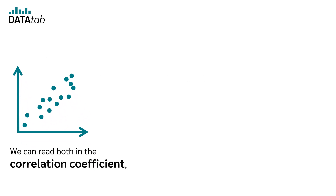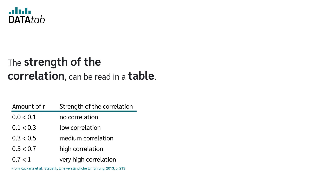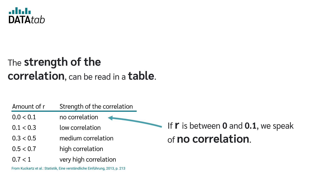We can read both in the correlation coefficient, which is between minus one and one. The strength of the correlation can be read in a table. If r is between zero and zero point one, we speak of no correlation.